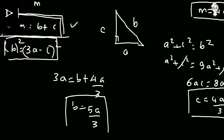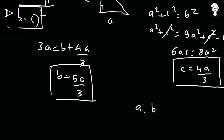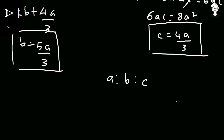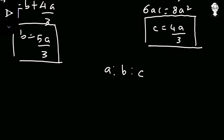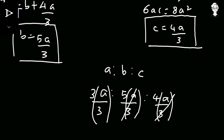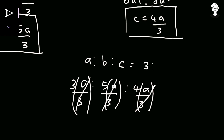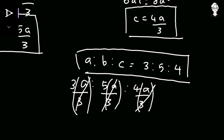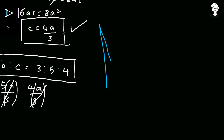Now we find the ratio A : B : C. We have A = A, B = 5A/3, and C = 4A/3. Multiplying each term by 3/A to clear fractions: A becomes 3, B becomes 5, and C becomes 4. Therefore, the ratio A : B : C equals 3 : 5 : 4. That is the answer — these three line segments are in the ratio 3 to 5 to 4.